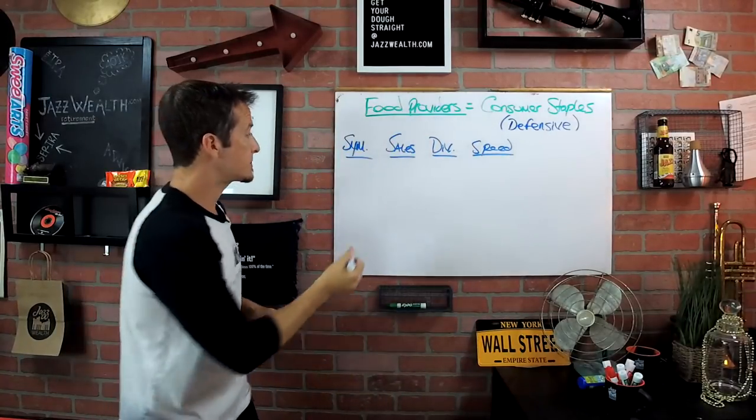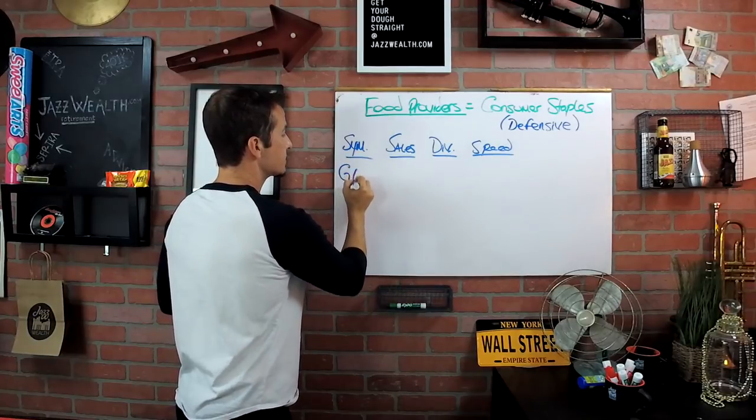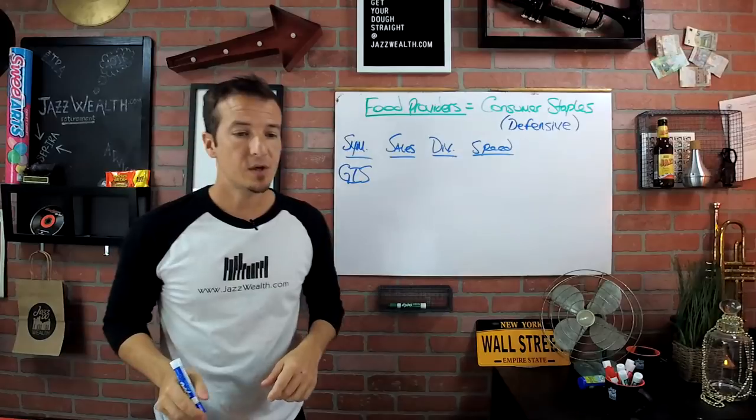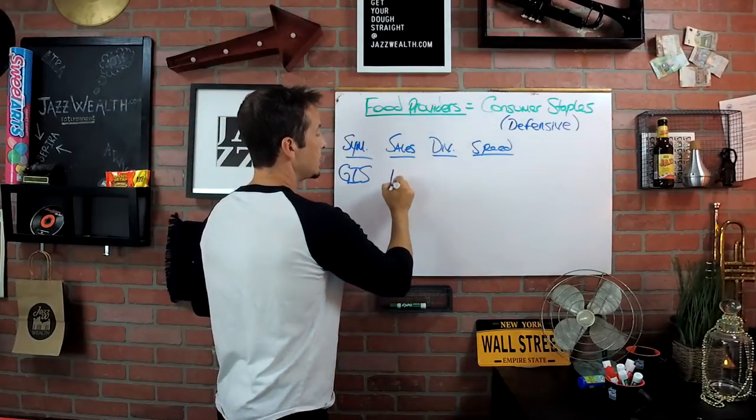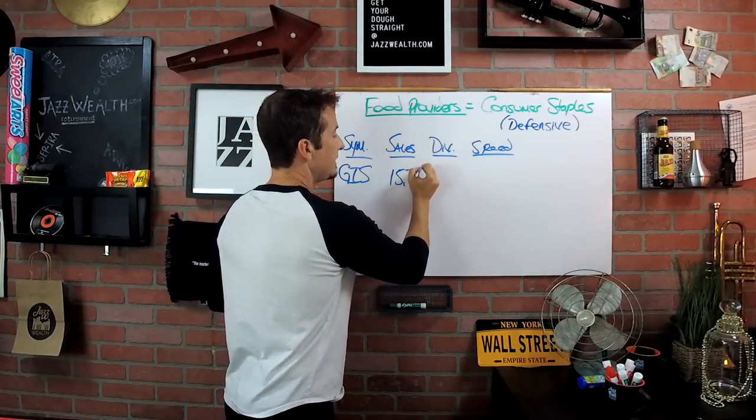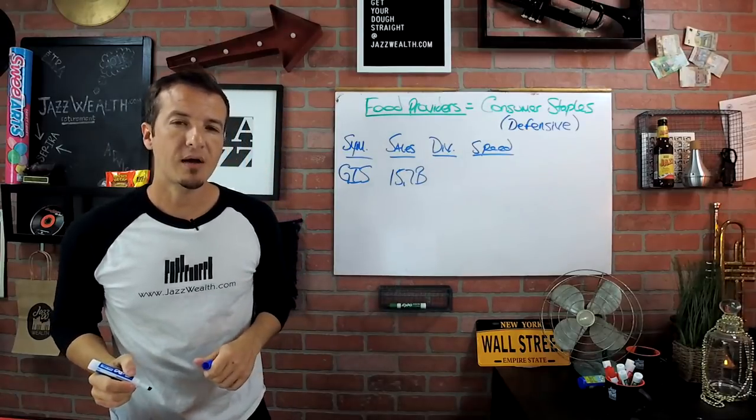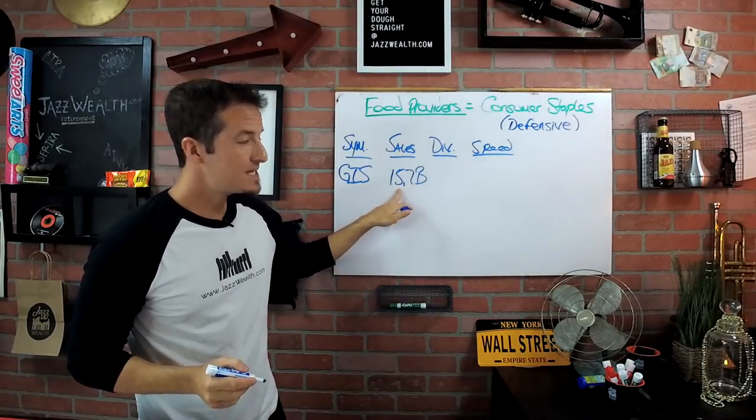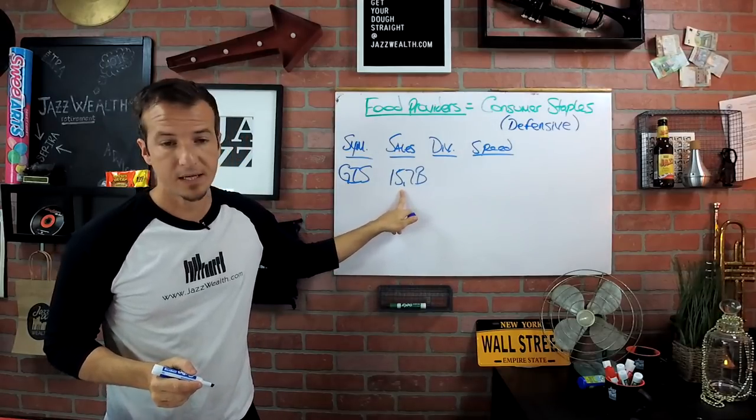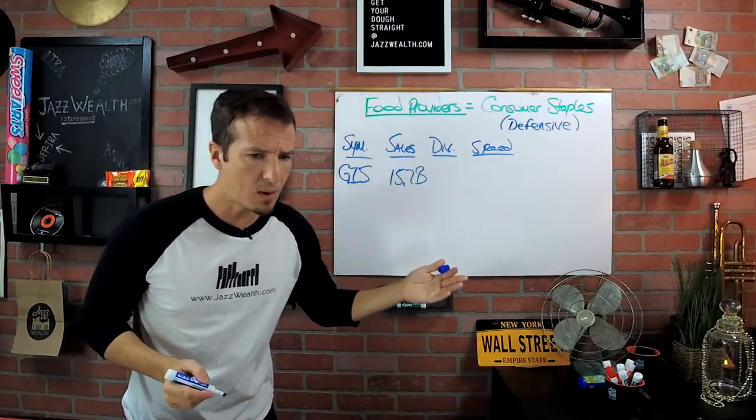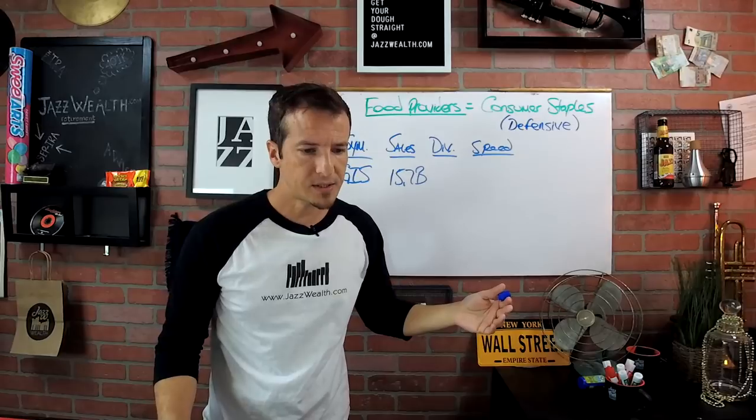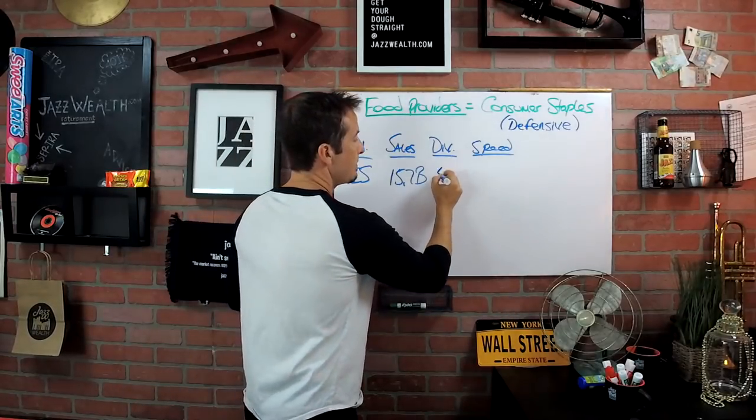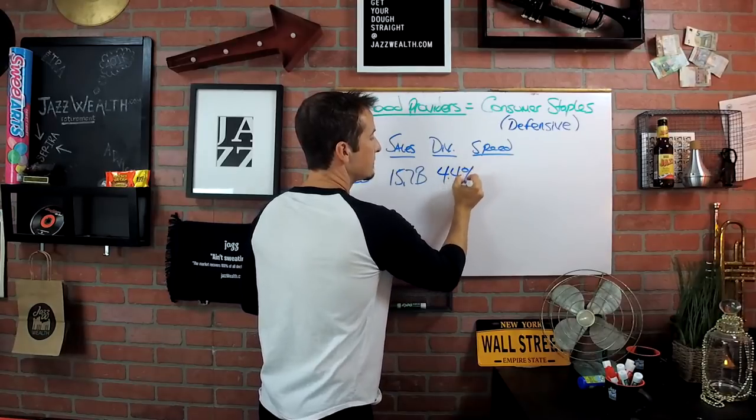First we have General Mills. You guys have all heard of General Mills. The ticker symbol is GIS. GIS did 15.7 billion in sales. Remember the whole conversation we had yesterday about Tilray and their sales? These guys did 15.7 billion in sales. They made like 1.6 billion.